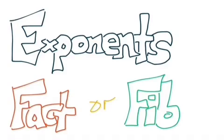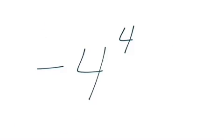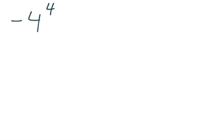Exponents fact or fib. I'm going to solve this exponent expression: negative 4 to the fourth power. Let's try to solve this and see if I can do it accurately. Fact or fib? I've got negative 4 to the fourth power, which means